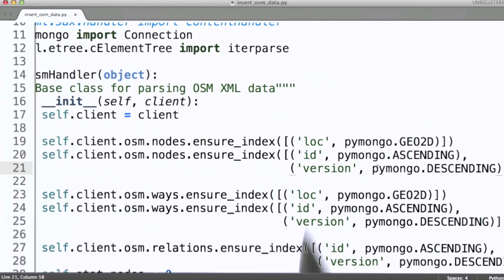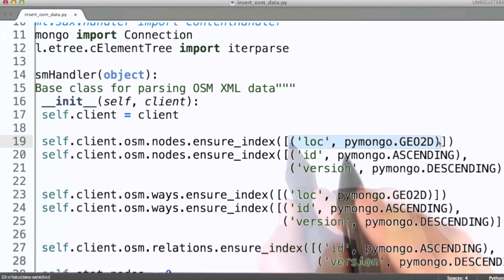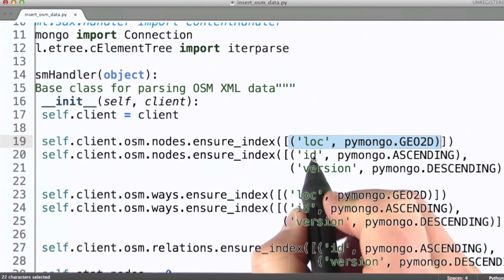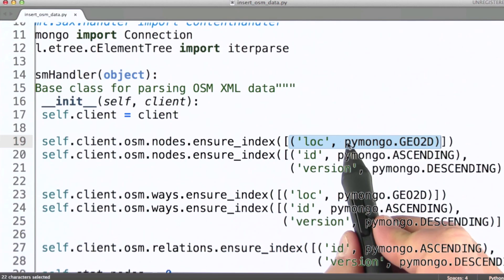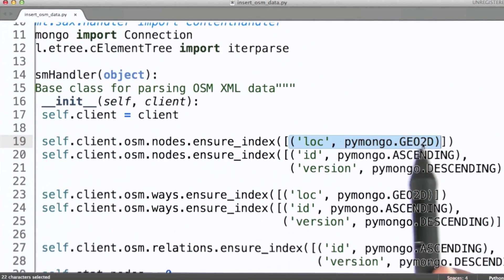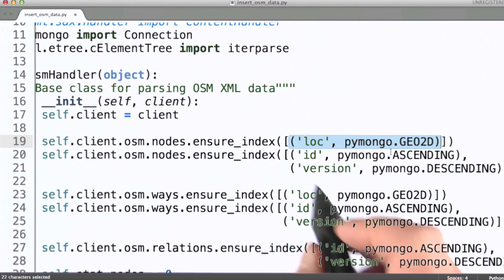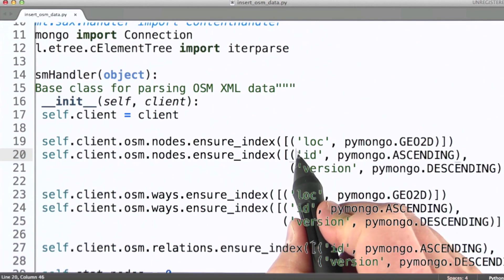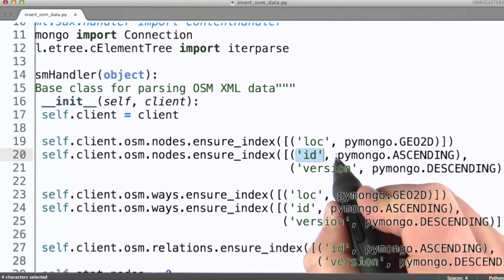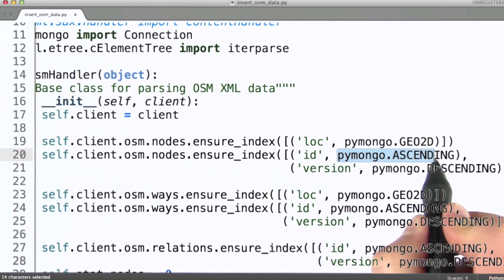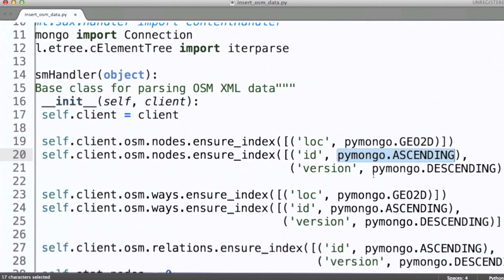Rather than passing a dictionary, what we pass instead is a list of tuples. We pass the name of the field that we want to create an index on, as well as a direction. These are constant values that are available to us in PyMongo, so we're not simply typing strings here, which is potentially very error prone. You can see that ensure index is actually being used here to create several indexes. Here's another example where we're creating an index on ID and we're specifying that we want that index to be created in ascending order.